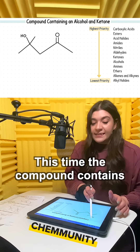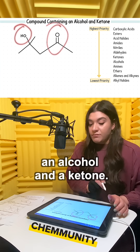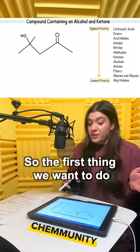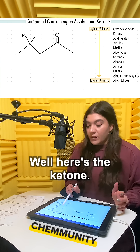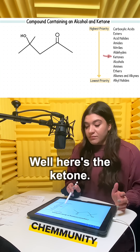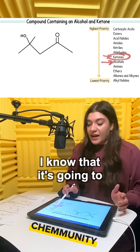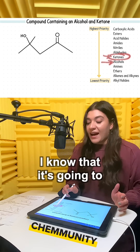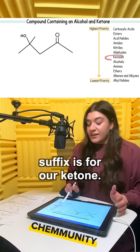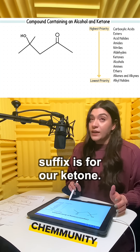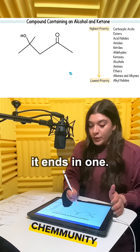This time, the compound contains an alcohol and a ketone. So the first thing you want to do is just figure out which one has a higher priority. Here's the ketone, here's the alcohol. The ketone is a little bit above it. I know that it's going to have to end with whatever the suffix is for our ketone, and for a ketone, it ends in -one.